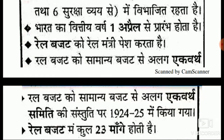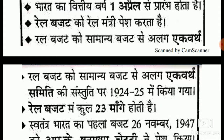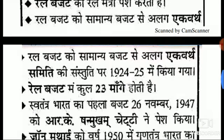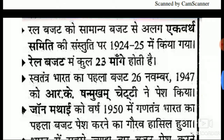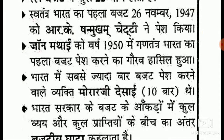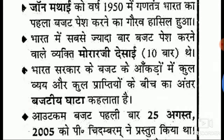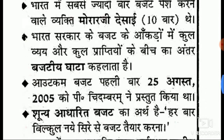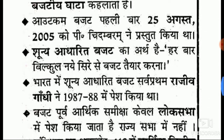India's financial year begins on 1 April. Now tell me in the comments when the Reserve Bank of India's financial year begins. The Rail Budget is presented by the Railway Minister. The Rail Budget was separated from the General Budget in 1924-25 based on the recommendation of the Acworth Committee, and it contains 23 demands. The first budget of independent India was presented on 26 November 1947 by R. K. Shanmukham Chetty. John Mathai had the honor of presenting the first budget of the Republic of India in 1950. The person who presented the budget the most times in India was Morarji Desai, who presented the budget 10 times. The difference between total expenditure and total receipts in the government budget is called the budget deficit. The Outcome Budget was first presented on 25 August 2005 by P. Chidambaram.